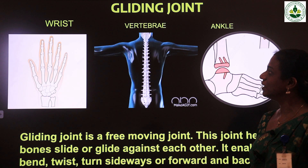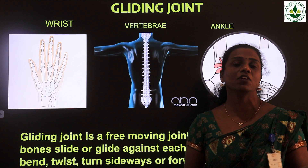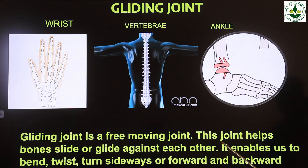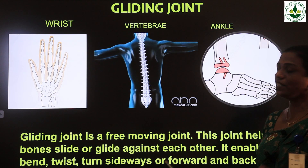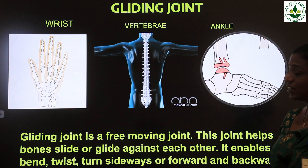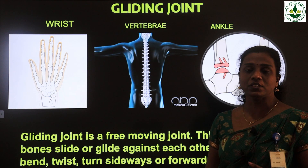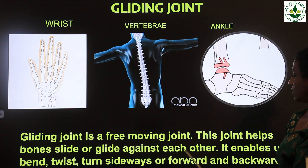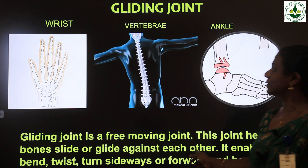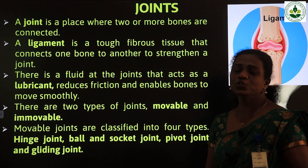The last type is gliding joint. The bones can slide or glide against each other. Gliding joint is a free moving joint. This joint helps bones slide or glide against each other, enabling us to bend, twist, turn sideways, or forward and backward.